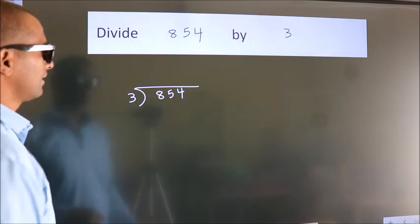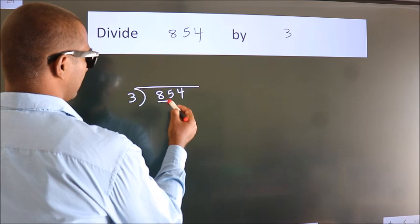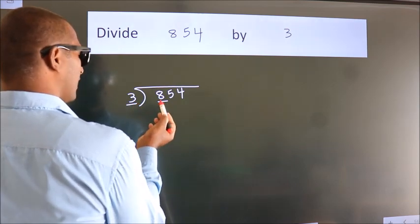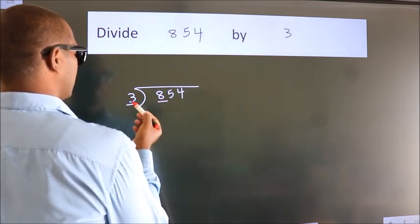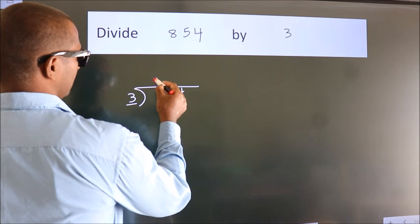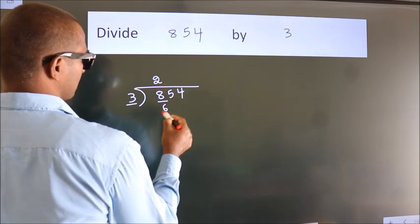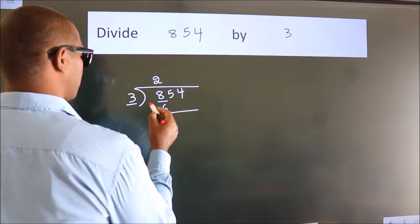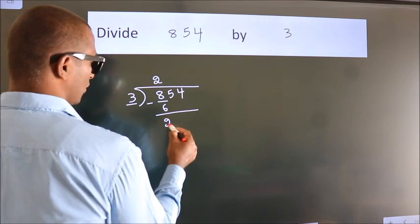Next, here we have 8, here 3. A number close to 8 in 3 table is 3 times 2, which is 6. Now we should subtract. We get 2.